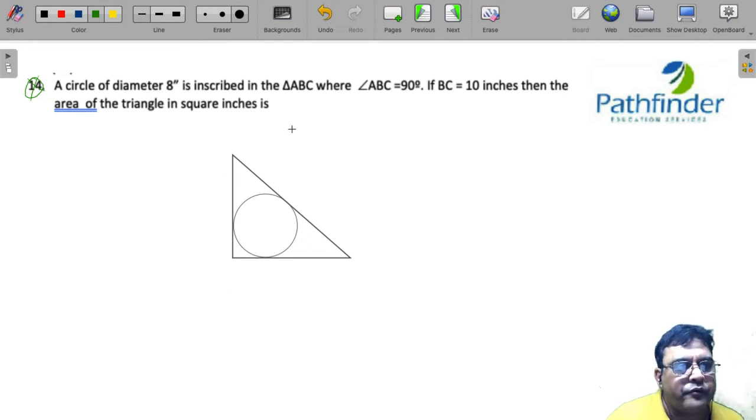Okay, so as shown, we have a circle which is inscribed in triangle ABC. Angle B is a right angle, and BC is given to us as 10 inches. And the radius, the diameter is given as 4, so radius must be 4 inches. Diameter is 8, in fact.